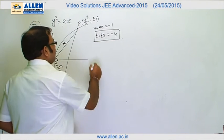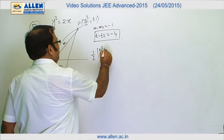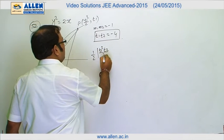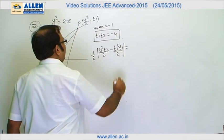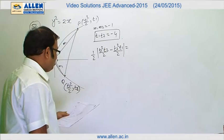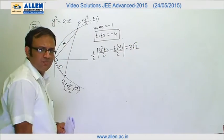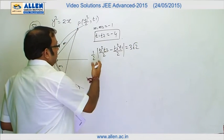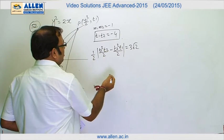One point is origin, so we can directly write the area as half |x1y2 - y1x2|. So the area is half |t1²t2/2 - t2²t1/2|, and this area is given to be equal to 3√2.